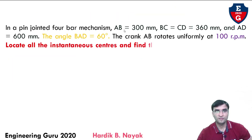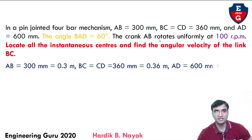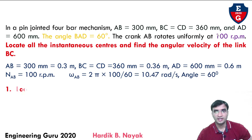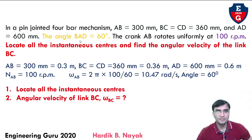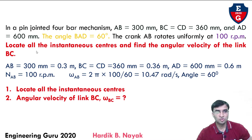The length of the fixed link is 300 mm, link BC and CD are equal to 360 mm, AD is equal to 600 mm, and angle BAD is equal to 60 degrees. The crank rotates uniformly at 100 rpm. Our goal is to locate all the instantaneous centers and find the angular velocity of the link. N_AB is given as 100 rpm.